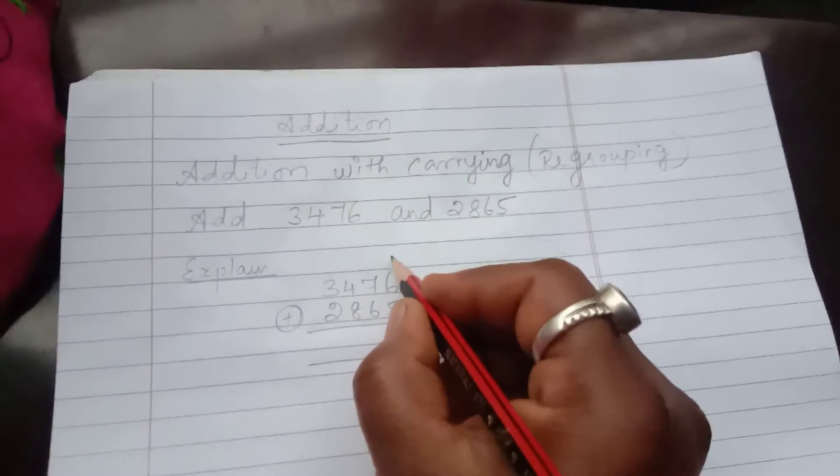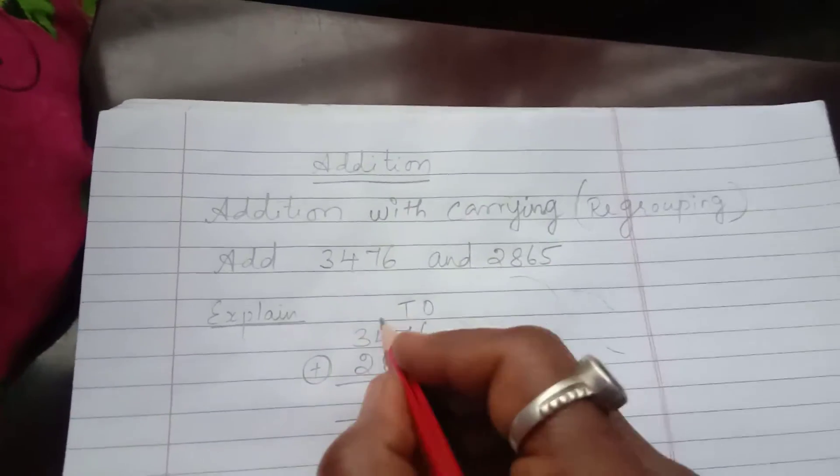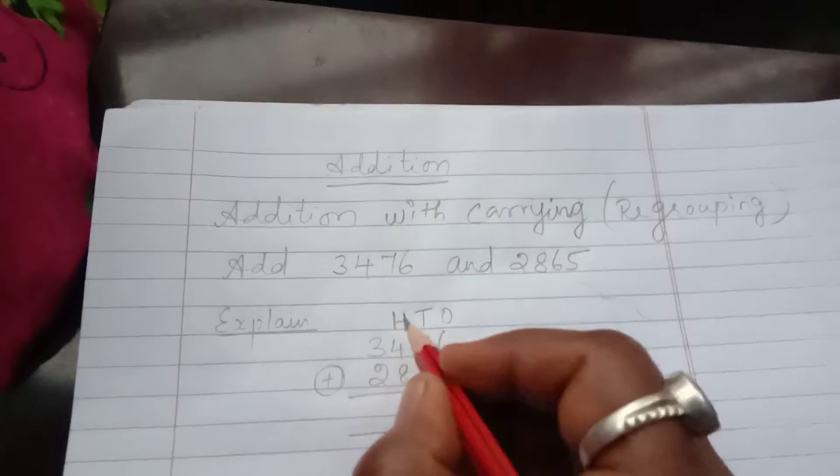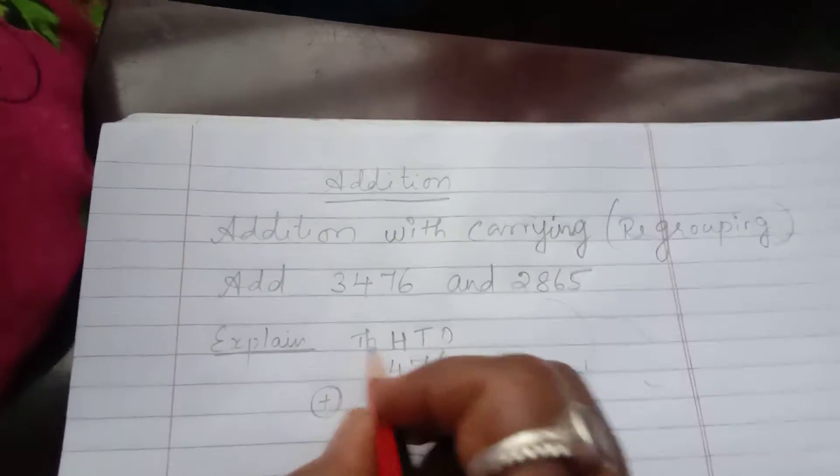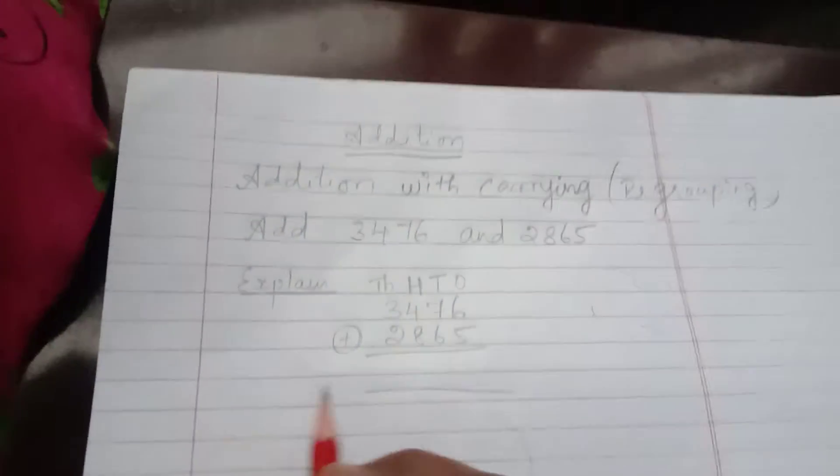Everyone knows that this is ones place, this is tens place, this is hundreds place, and this is thousands place. So now I am going to explain in detail. So first, adding in ones place.